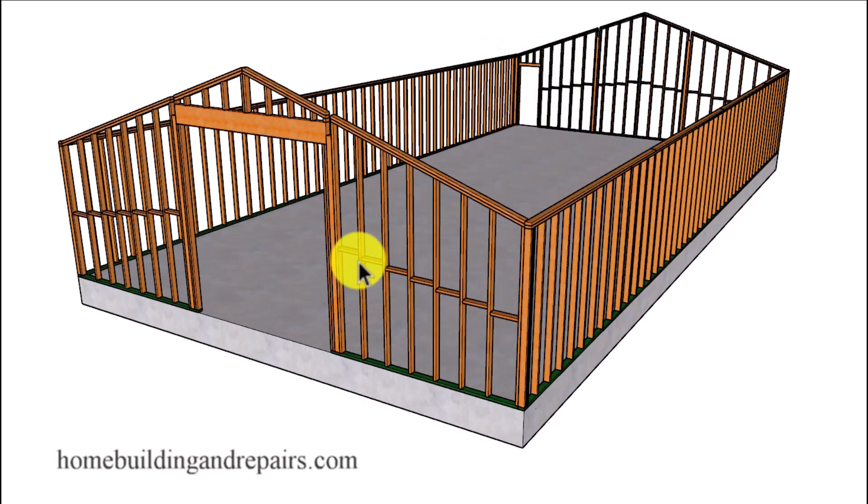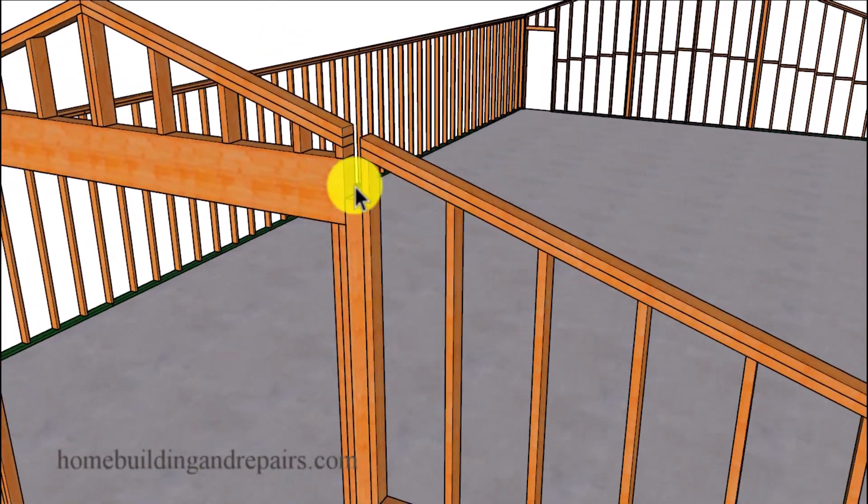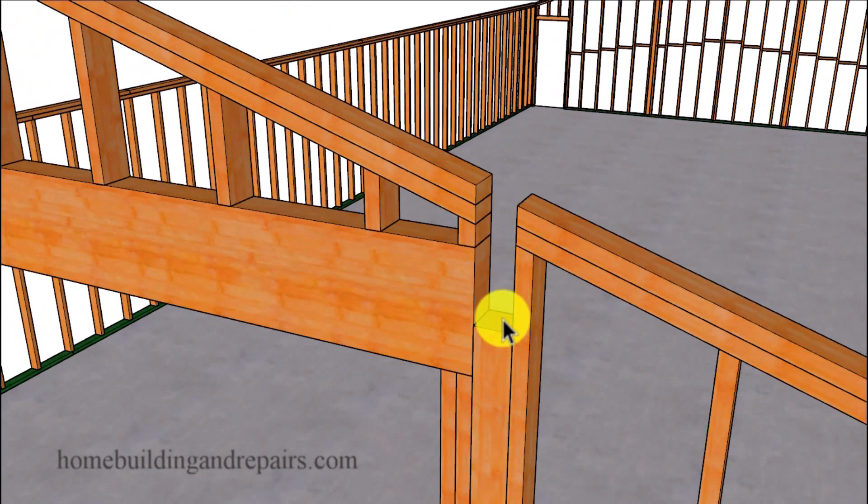And of course our mid-span blocks and the pockets for our beams that will be supporting the roof. It wouldn't be a bad idea to strap these two beams together. This beam to the beam that's going to be running in this direction, along with strapping the top plates together.